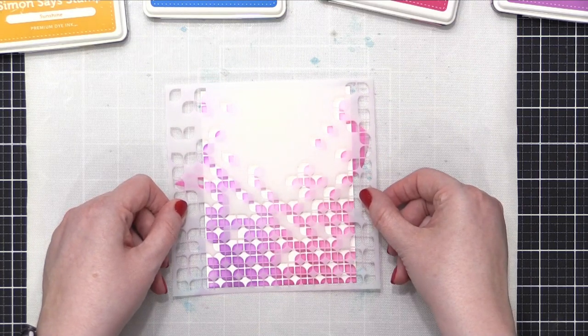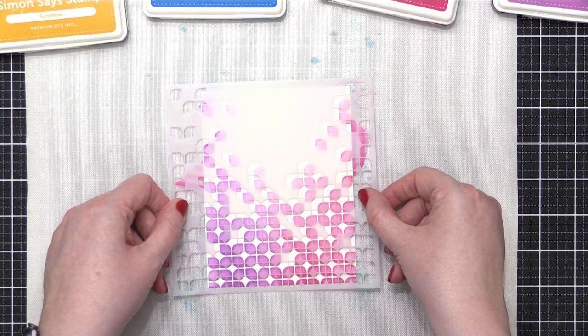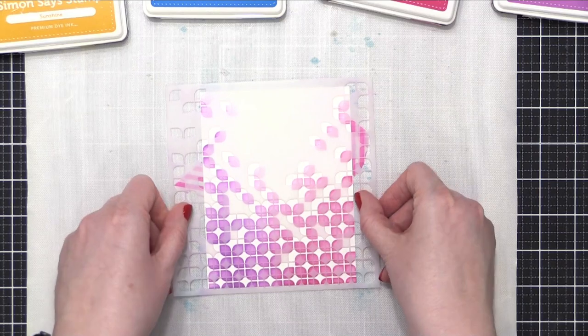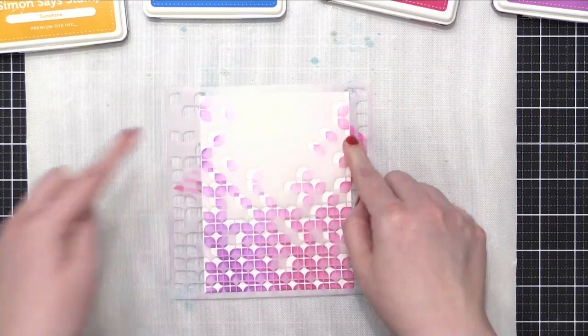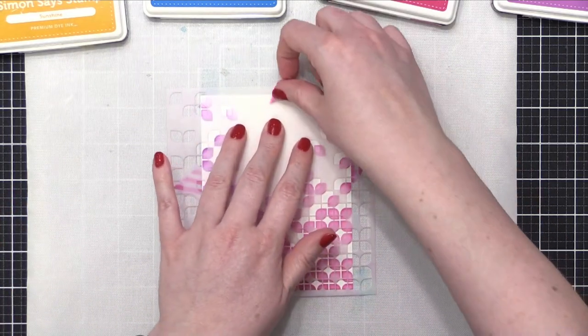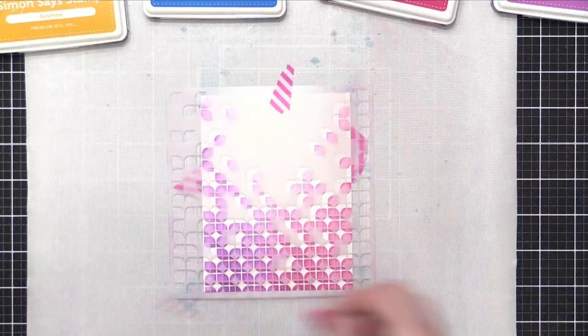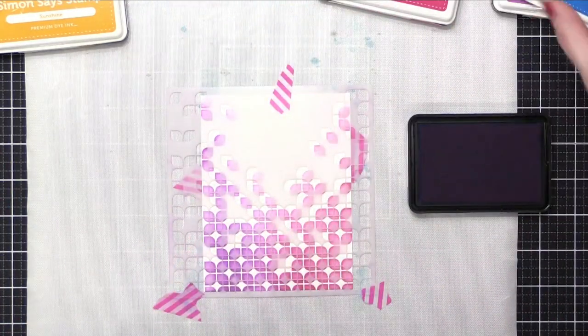In this case, I'm trying to line up the little squares that create the pattern right over top of the existing pattern, so that they overlap perfectly, but intersecting. I'm gonna tape this down once again, just so it doesn't move around, and then I'll get to the blending.